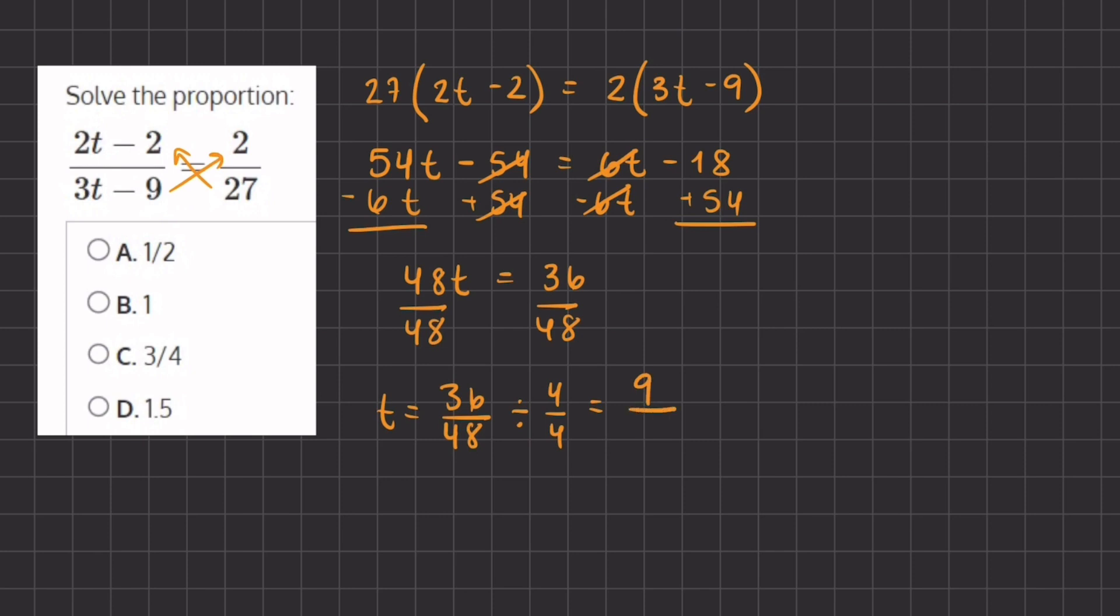We can further simplify this because 9 and 12 are both divisible by 3. So we have 9 divided by 3 which is 3, and 12 divided by 3 which is 4.